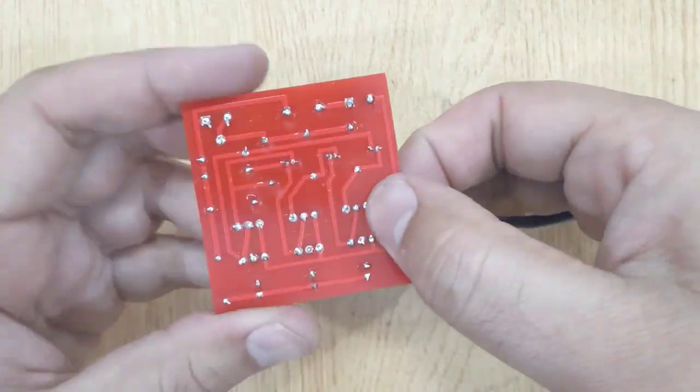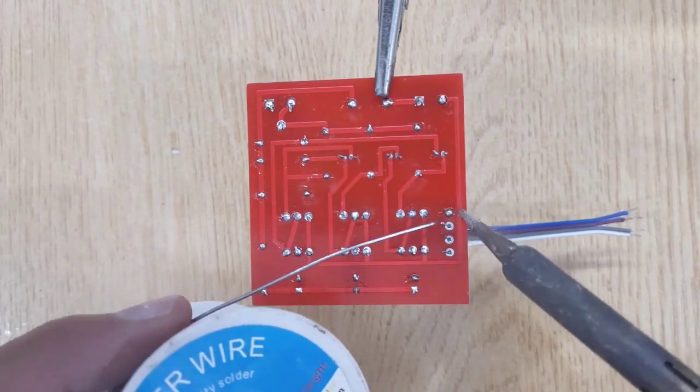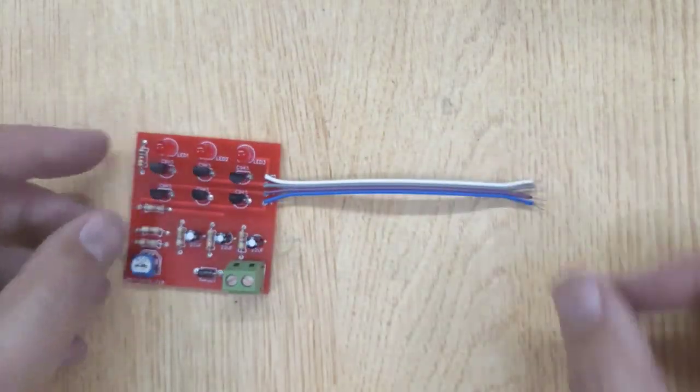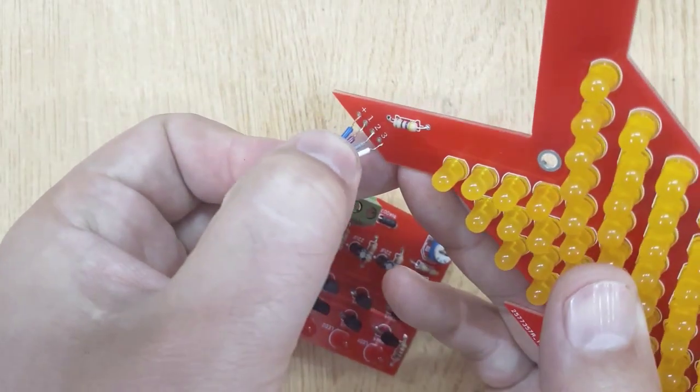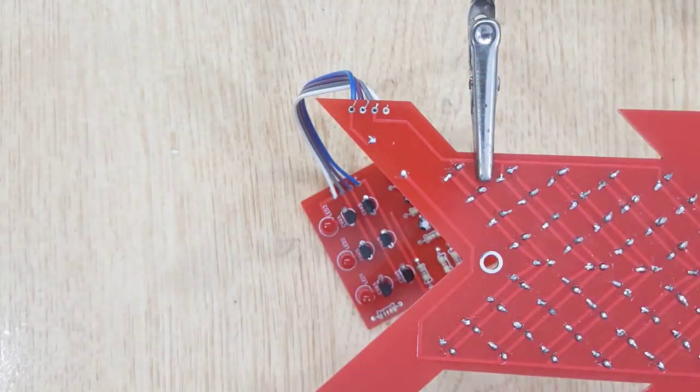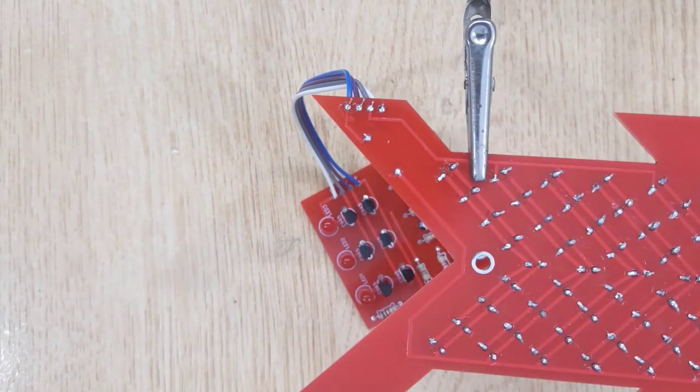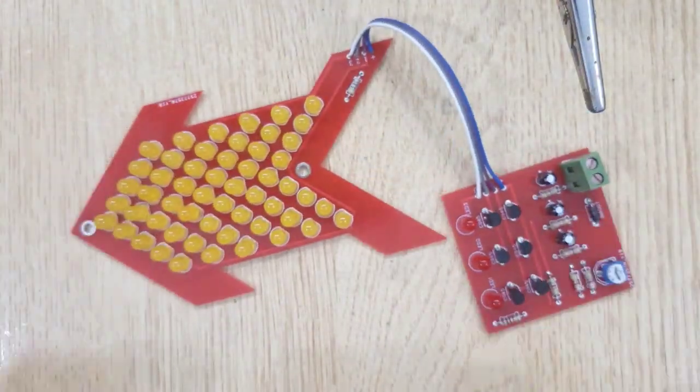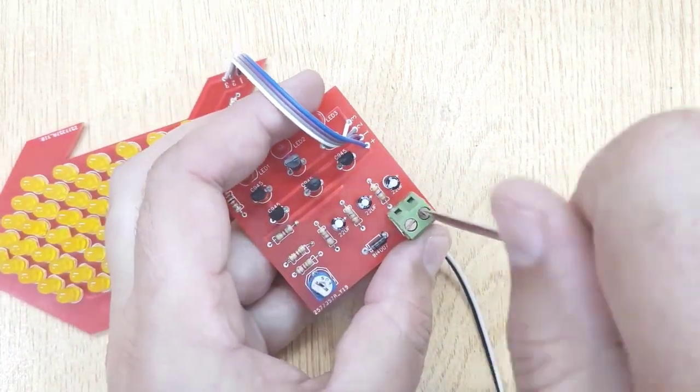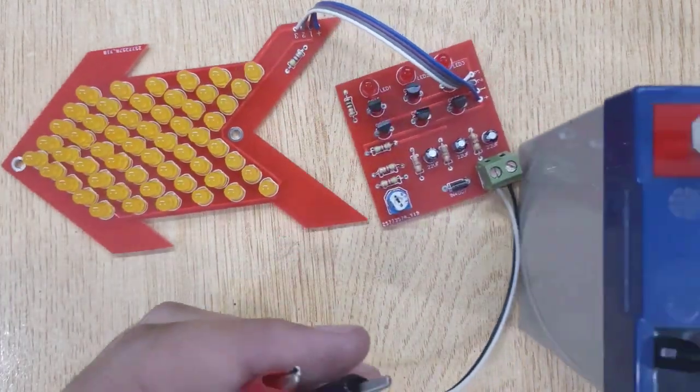Now connect both PCBs using four pieces of electric wire. And at last connect with the 9V battery. You can also increase or decrease the speed of the arrow by adjusting the variable resistor.